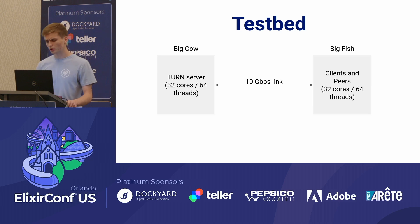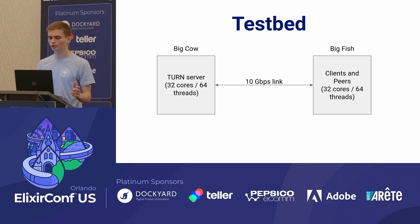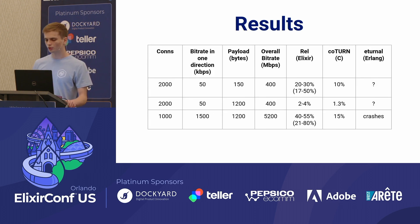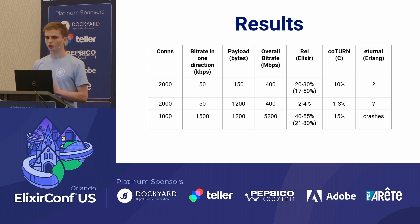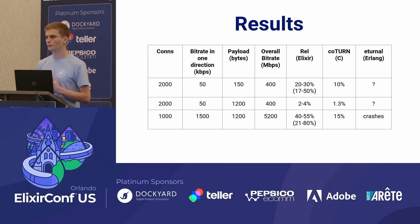Our testbed: we have two big machines, Big Fish and Big Cow. Big Fish is 32 cores, 64 threads — it handles clients and peers. Big Cow handles our TURN server. These machines are connected with a 10 gigabits per second link. We picked three different TURN servers to compare: REL (our own), Coturn (written in C, the most popular one available for 10 years), and a turnar written in Erlang. We started with a phone call-like scenario, sending about 50 kilobits of data in one direction with 2,000 connections, resulting in 400 megabits of overall bitrate. Overall bitrate is the sum of total incoming and total outgoing bitrate on the TURN server machine.